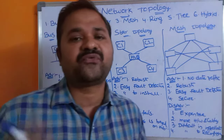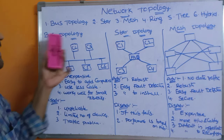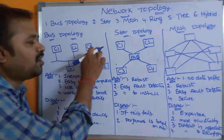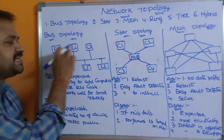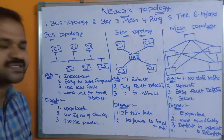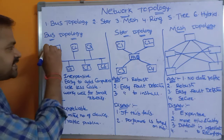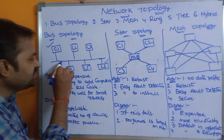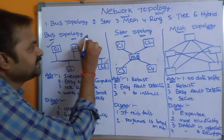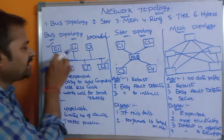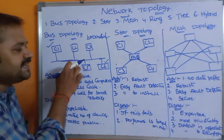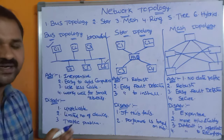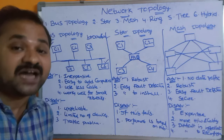The first topology is bus topology. In a bus topology we have a single cable, and all the computers are connected to that cable. Here we have six computers — C1, C2, C3, C4, C5, C6 — all connected together with this cable. If C1 wants to send a message to C6, it broadcasts the message through the cable, meaning the message is transmitted to all connected computers.